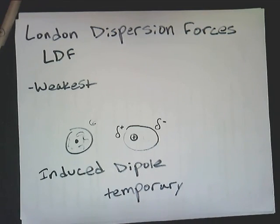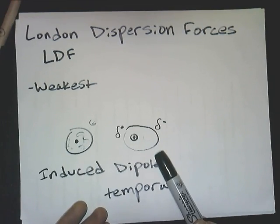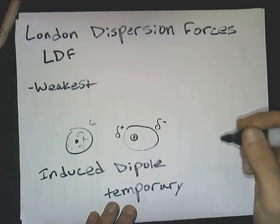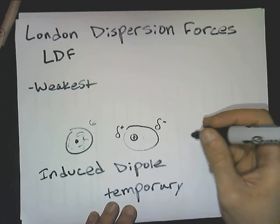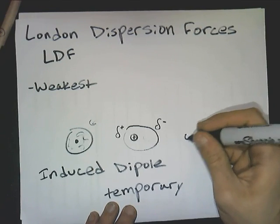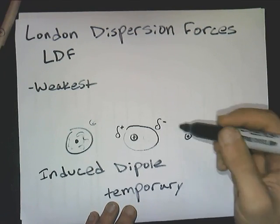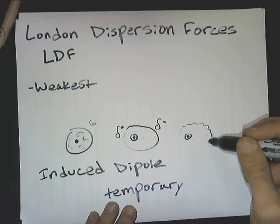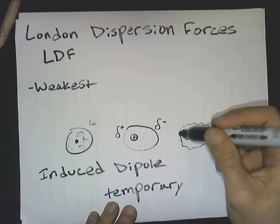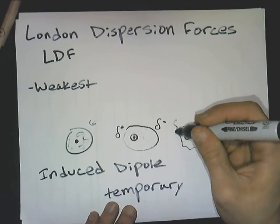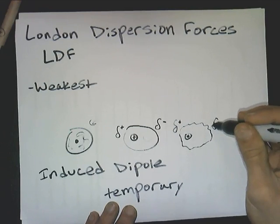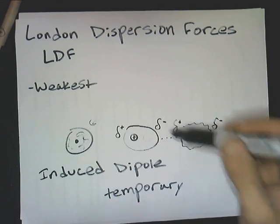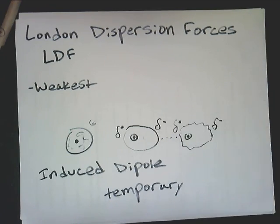So when we have this temporary dipole, if this happens to be next to another atom, then that atom can also be like: there's a partial negative charge there. That's also going to push my electron cloud over. So it'll develop a partial positive there and a partial negative there, and now there's going to be some attraction between these two opposite charges.